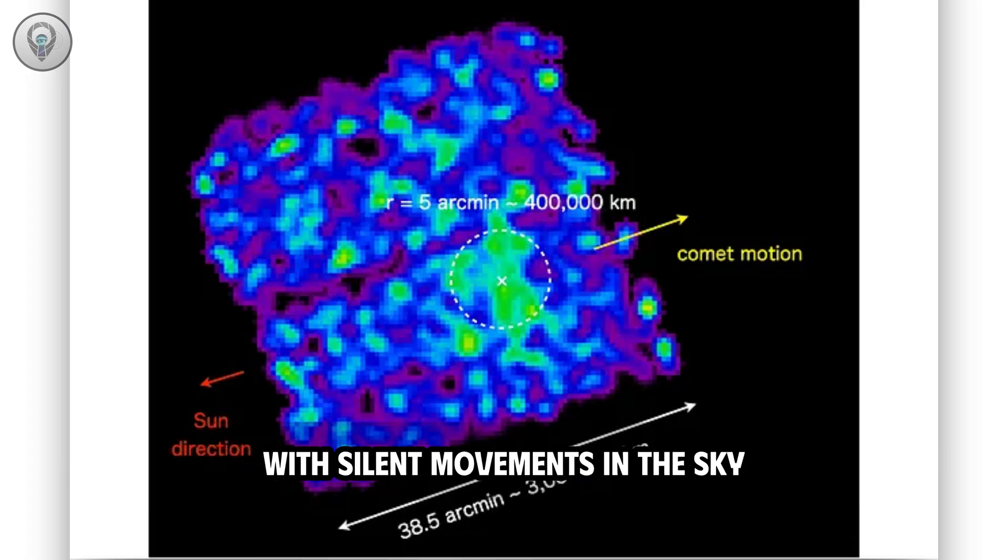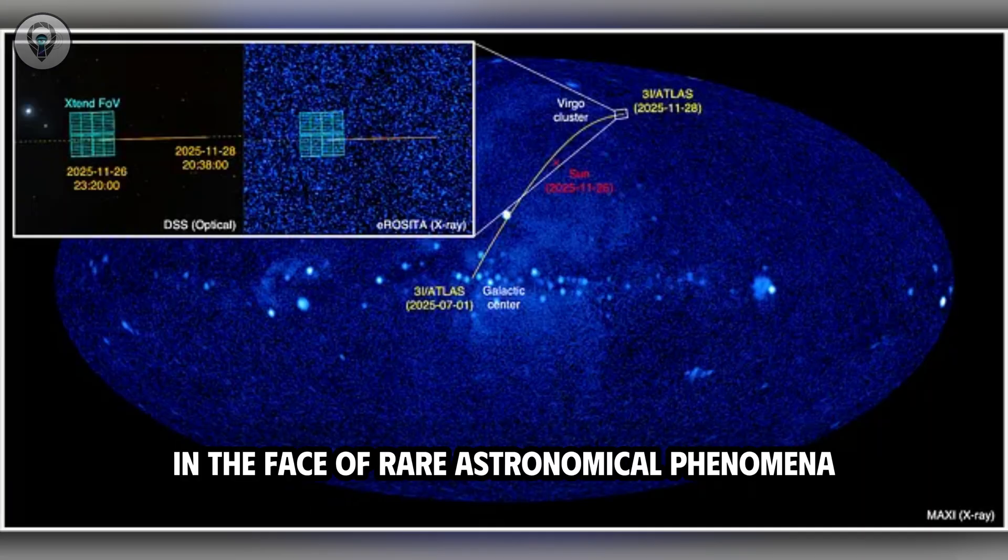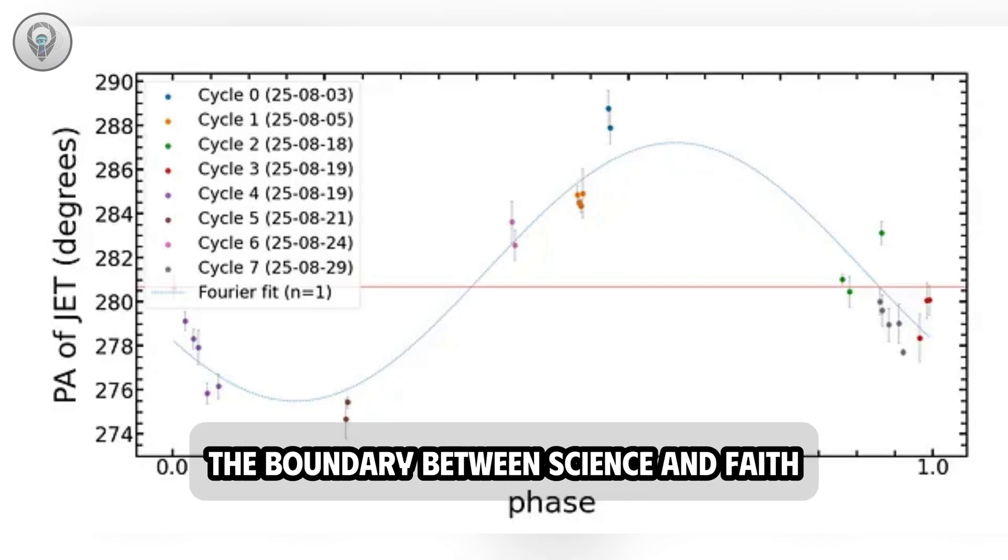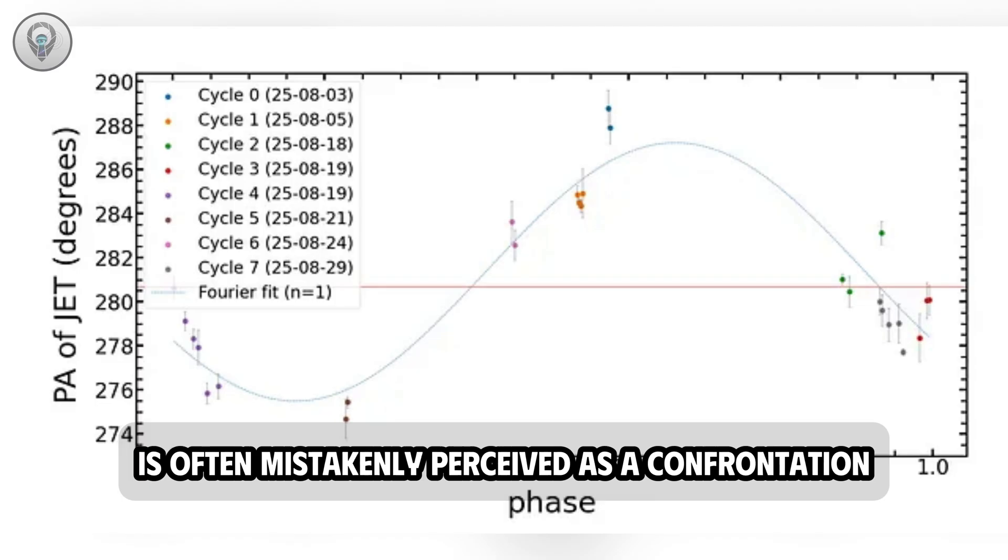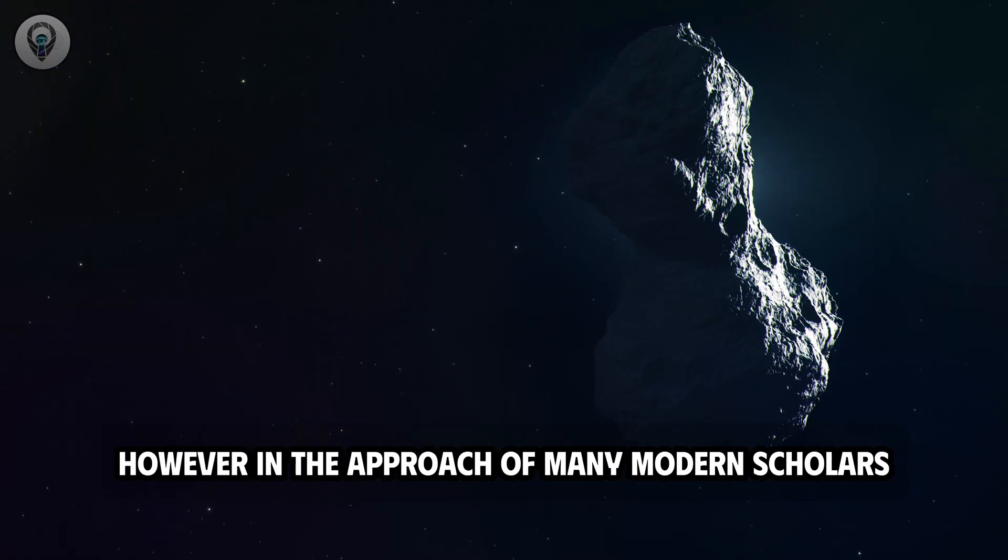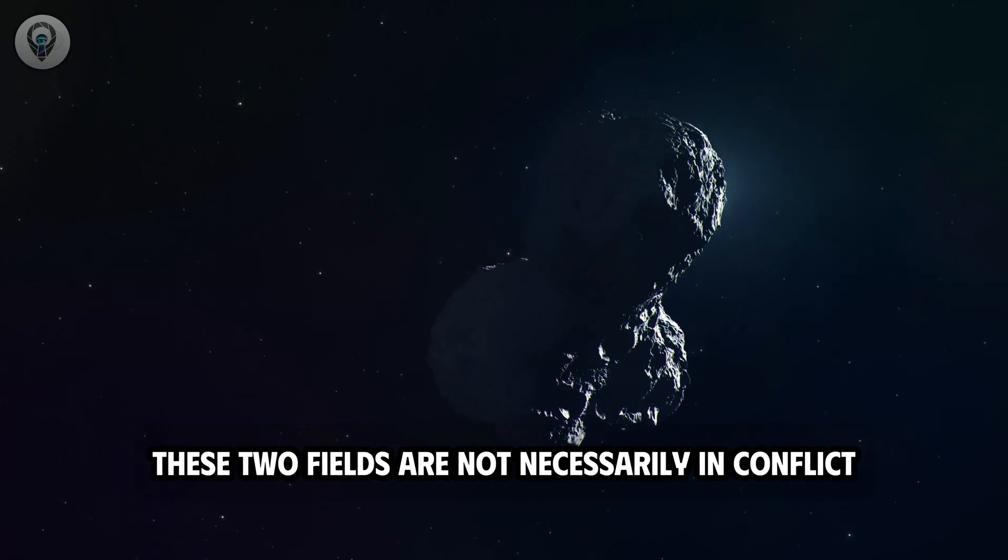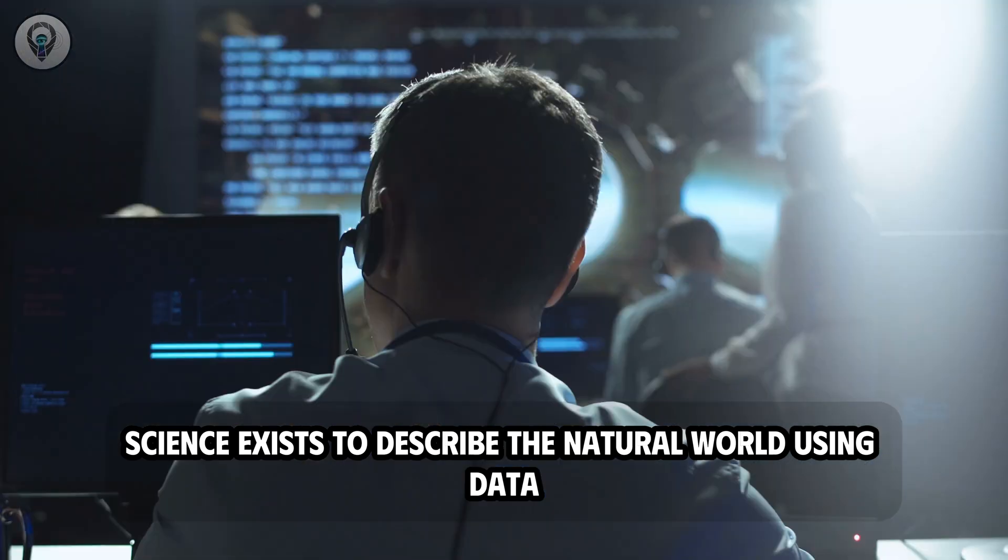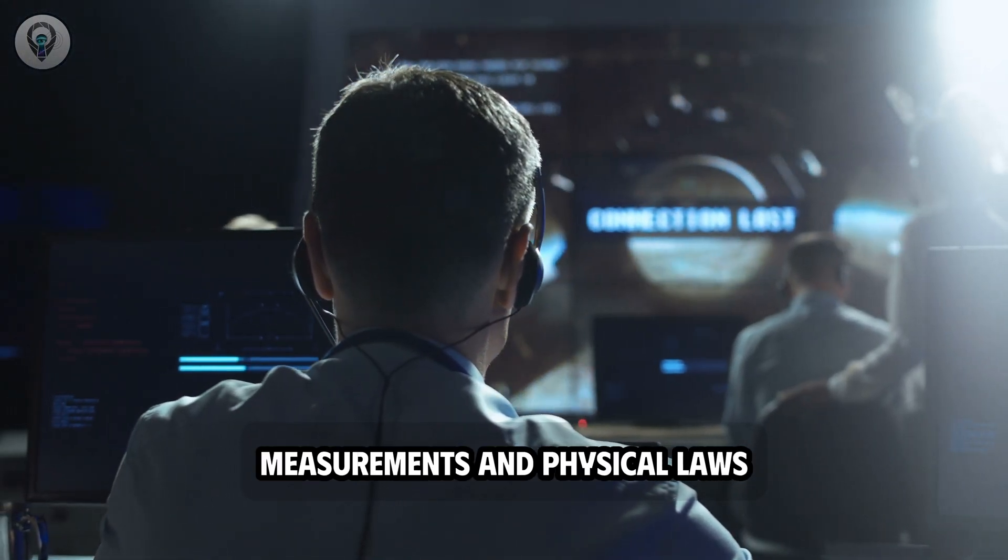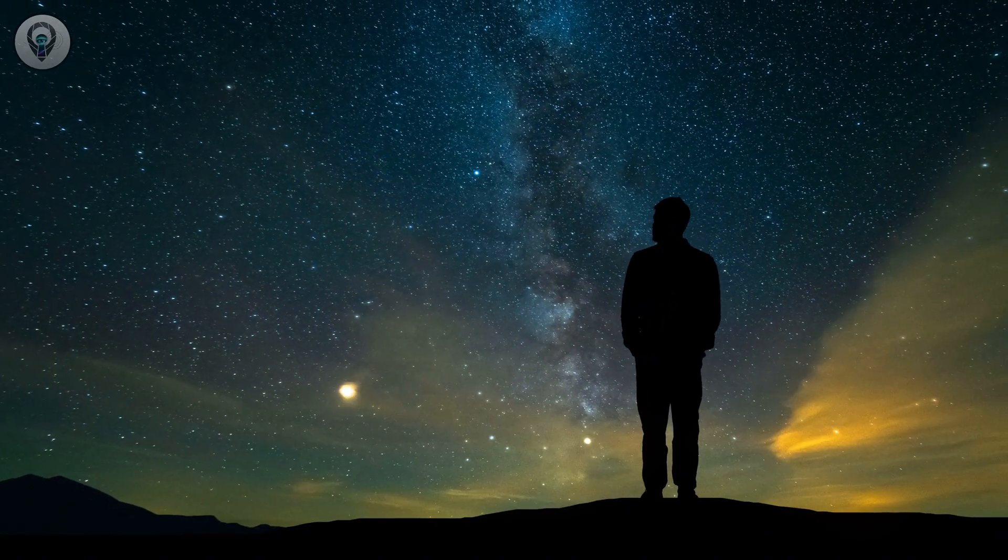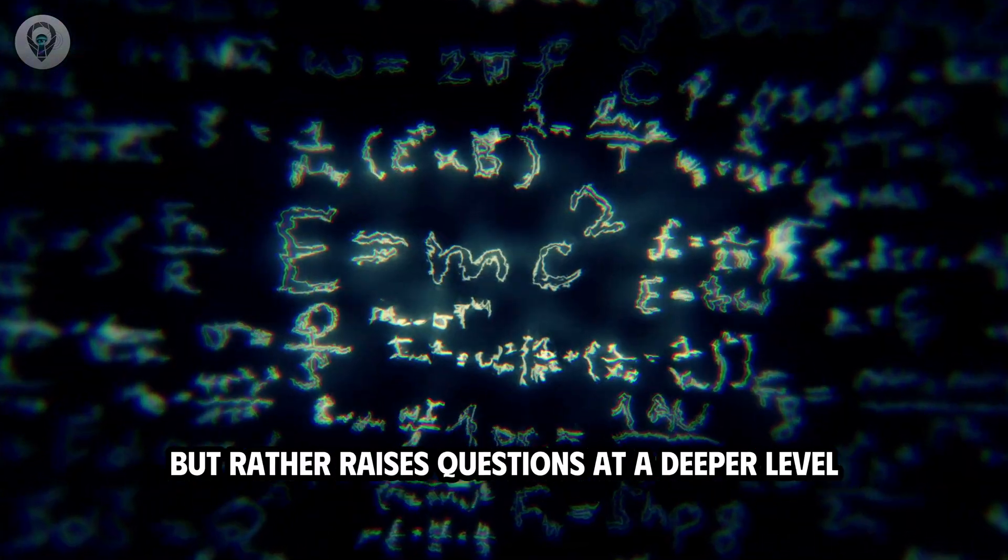In the face of rare astronomical phenomena like the 3i Atlas, the boundary between science and faith is often mistakenly perceived as a confrontation. However, in the approach of many modern scholars, these two fields are not necessarily in conflict. Science exists to describe the natural world using data, measurements, and physical laws, while faith does not seek to replace those descriptions, but rather raises questions at a deeper level.